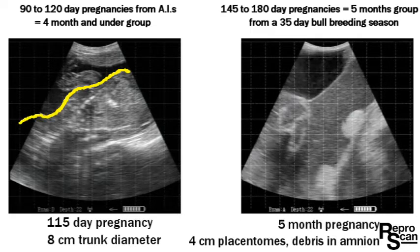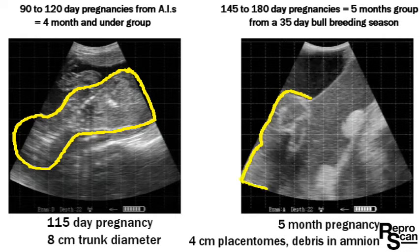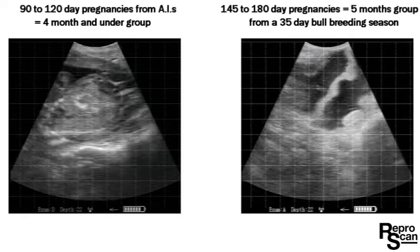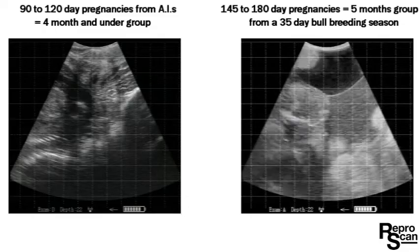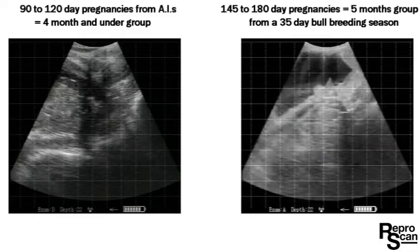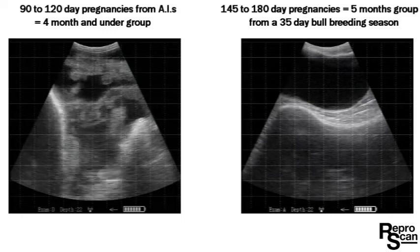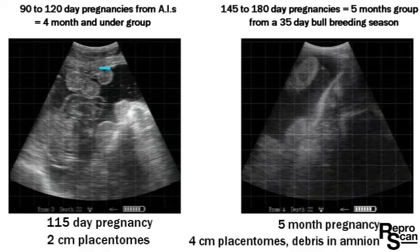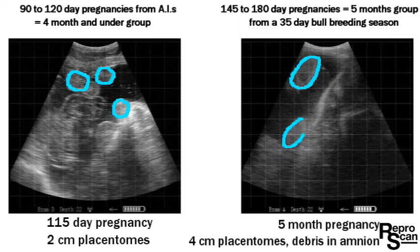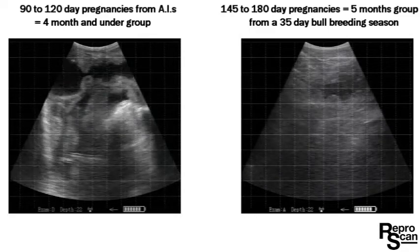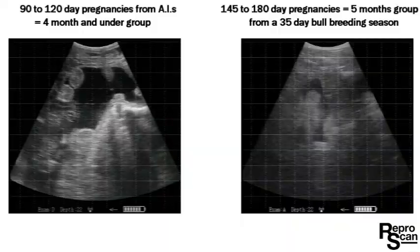The backwards calves are a little trickier, but we can outline the 115 day — call it a four month — on the left, and there's part of a five month fetus on the right. We're outlining some placentomes now, the amnion, and note the debris in the five month pregnancy in the amnionic fluid — quite normal and a bit of an indicator of stage of gestation. Very rough, mind you: two centimeter, one square placentomes on the left, and some two square, four centimeter placentomes on the right, with more debris in the five month pregnancy.